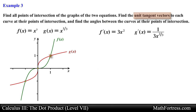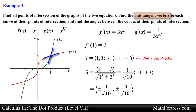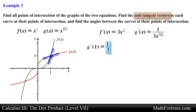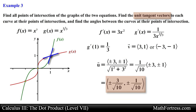At the point (1, 1), the slope of the tangent line for f(x) is equal to 3, so a vector pointing in the direction of this tangent line has components (1, 3) or (−1, −3). We normalize by dividing each component by the magnitude of the vector to obtain the unit tangent vectors for f(x). For g(x), the slope of the tangent line is one third, so the corresponding direction vector is (3, 1) or (−3, −1). We normalize that vector as well to obtain the unit tangent vectors for g(x).